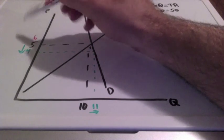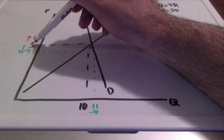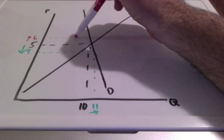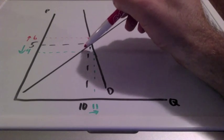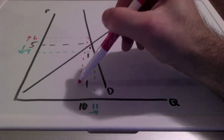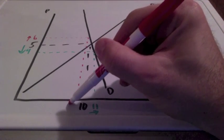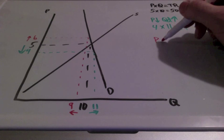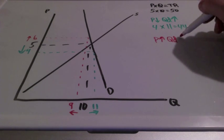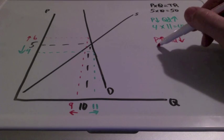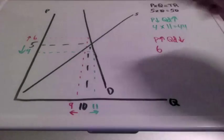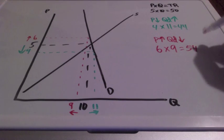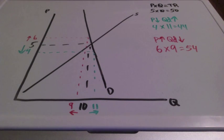What happens when our price increases from our equilibrium price of 5 to 6? The quantity demanded goes down from 10 to 9 units. The law of demand says when prices go up, quantity demanded will go down. Our total revenue with this price would be 6 times 9, which equals 54. Our total revenue increased from our equilibrium total revenue of 50.